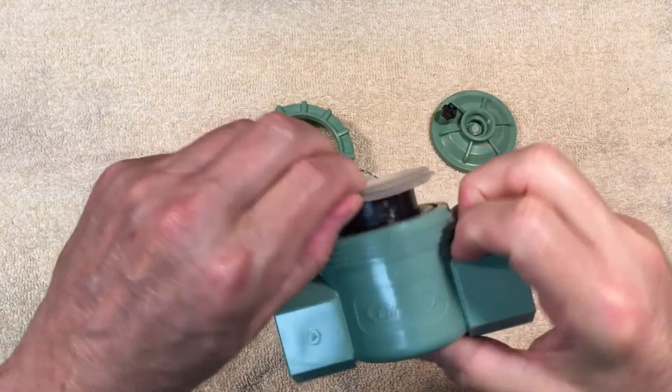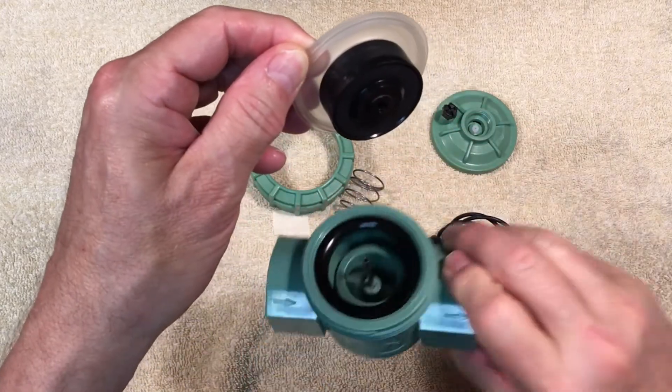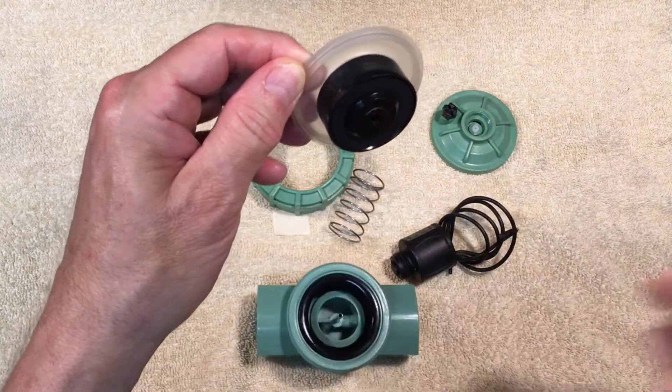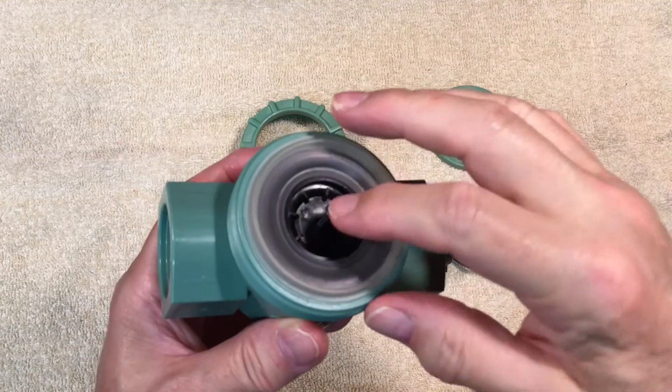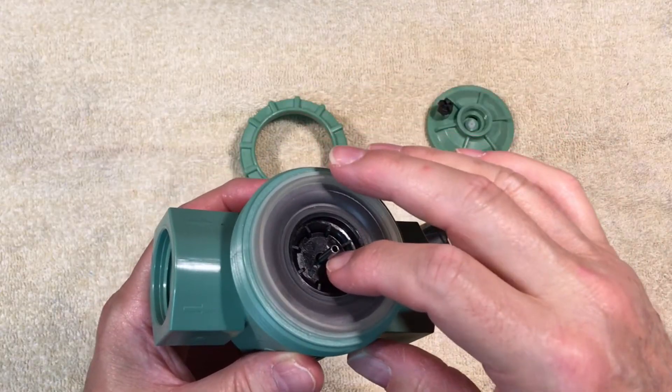When the diaphragm is all the way down, the rubber washer on the bottom of the diaphragm seals on this seat. The hard plastic part of the diaphragm fits fairly tightly around the stainless tube, but it is not watertight.